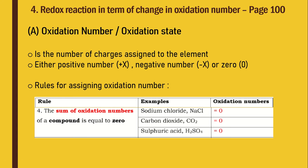Rule 4: The sum of oxidation numbers of a compound is equal to 0. For example, sodium chloride NaCl is an ionic compound. Na⁺ has oxidation number +1 and Cl⁻ has oxidation number −1, so +1 + (−1) = 0. The same goes for carbon dioxide CO₂, a covalent compound: carbon is +4 and 2×(−2) for oxygen gives +4 + (−4) = 0.